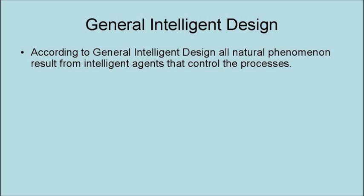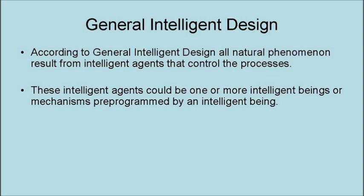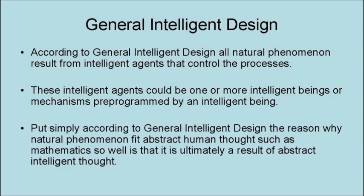According to general intelligent design, all natural processes result from intelligent agents that control the processes. These intelligent agents could be one or more intelligent beings or mechanisms pre-programmed by an intelligent being. Put simply, according to general intelligent design, the reason why natural phenomena fit abstract human thought, such as mathematics, so well, is that it is ultimately a result of abstract intelligent thought.